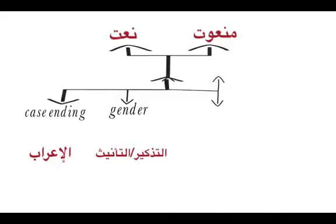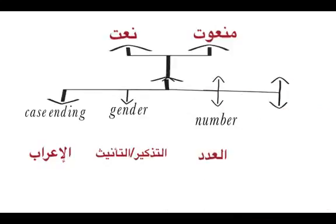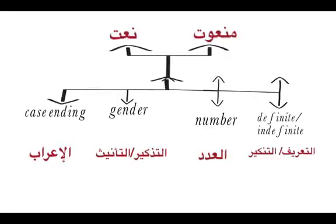The third thing is number — Al-Adad. If Man'ud is singular, Naat will be singular. If Man'ud is plural, Naat will be plural. If Man'ud is dual, Naat will be dual. The last and final thing is definite or indefinite. If Man'ud is indefinite, Naat will be indefinite. If Man'ud is definite, Naat will be definite — At-Ta'rif wa At-Tankir. Nakira means indefinite, Ma'rif means definite.